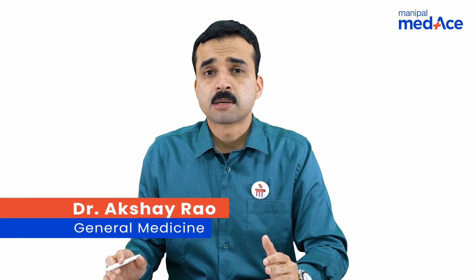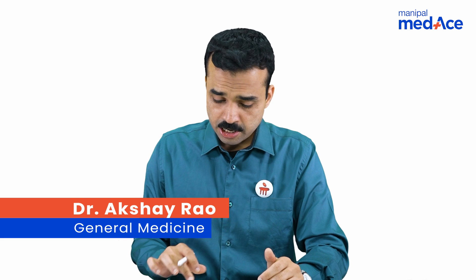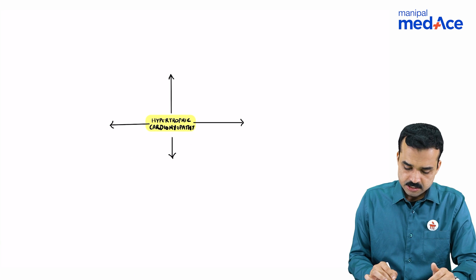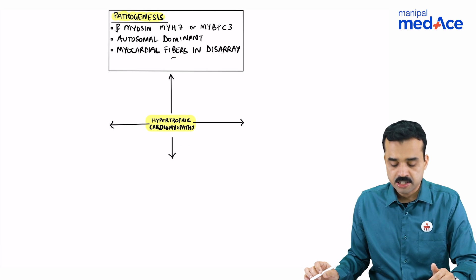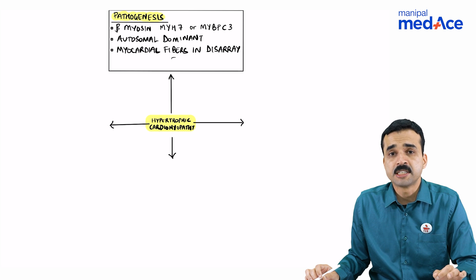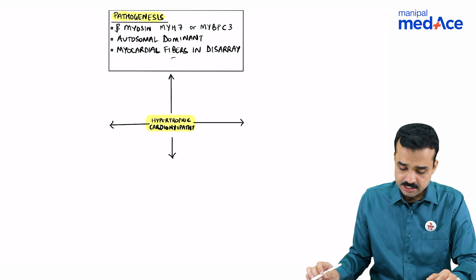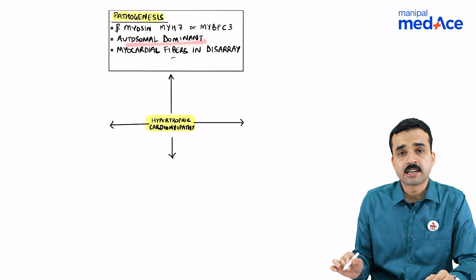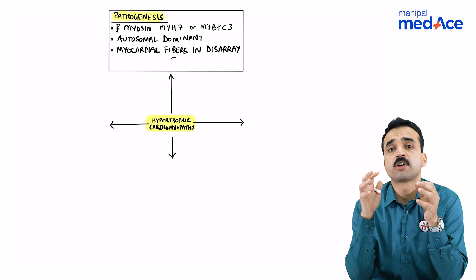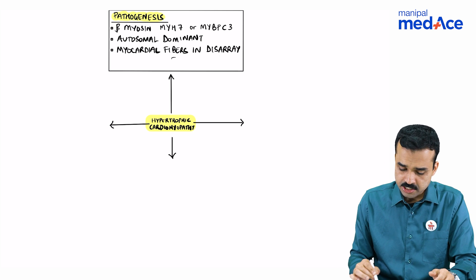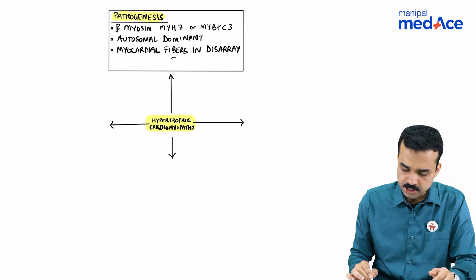Students, what are the important aspects about hypertrophic cardiomyopathy? HCM occurs as a result of mutation in the beta-myosin heavy chain, especially the MYH7 or the MYBPC3 gene. It is inherited in an autosomal dominant manner and it results in the myocardial fibers being arranged in total disarray, which leads to an increased risk for arrhythmias.